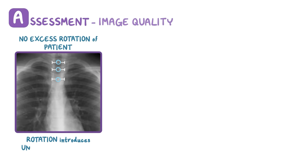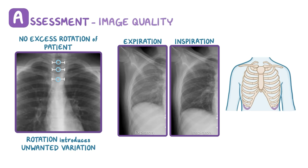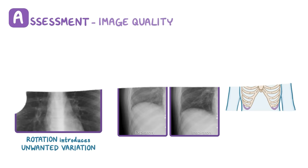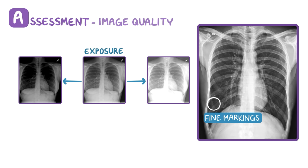Next, a good inspiration film should show at least the 10th or 11th posterior ribs. If the lungs are not fully expanded, we might miss important diseases. Finally, we need to make sure that the exposure isn't too bright or too dark. To check for this, you can look for fine markings in the lung fields to make sure they're visible. If the fine lung markings aren't visible, then the x-ray may fail to detect some diseases.